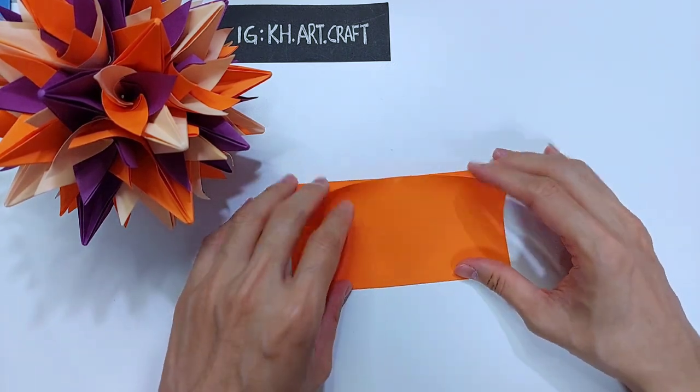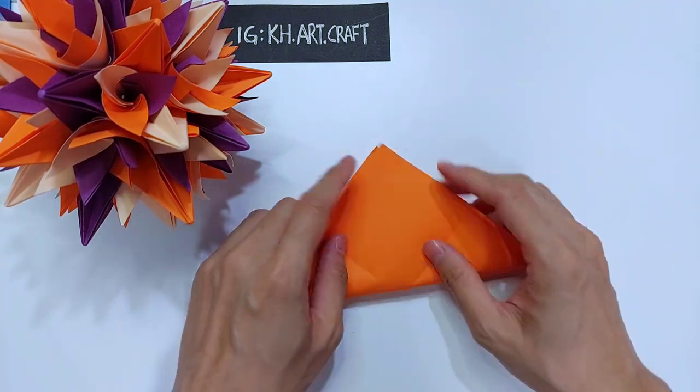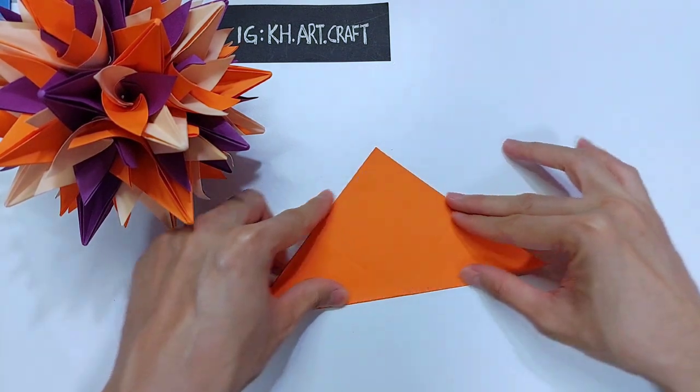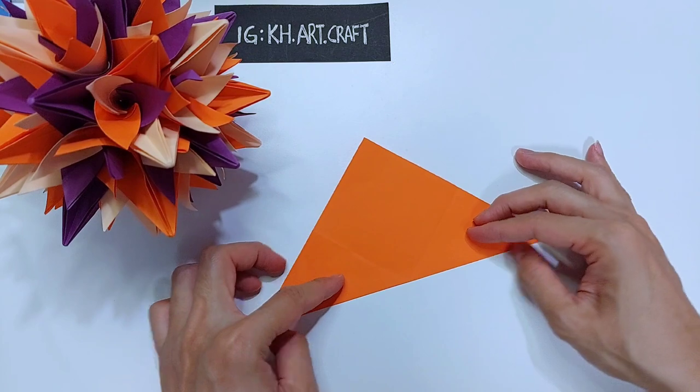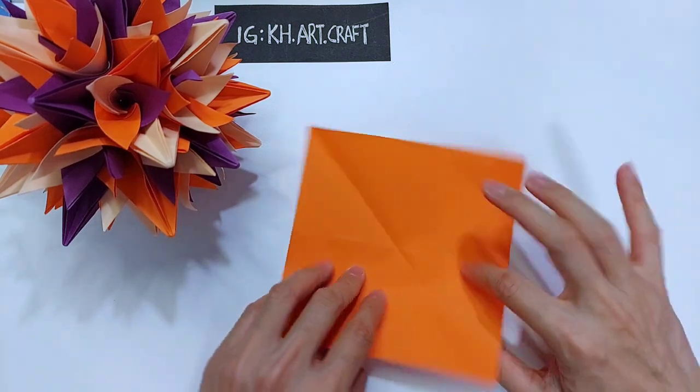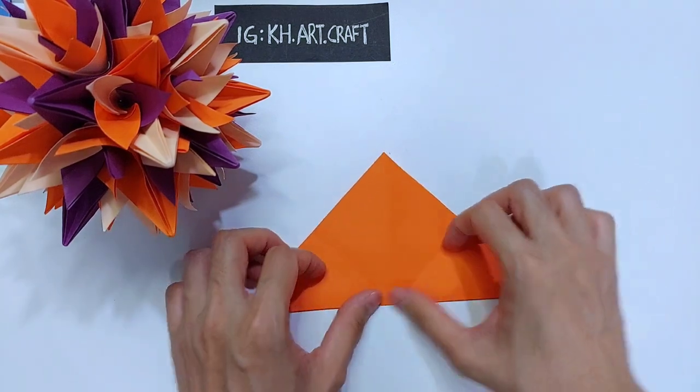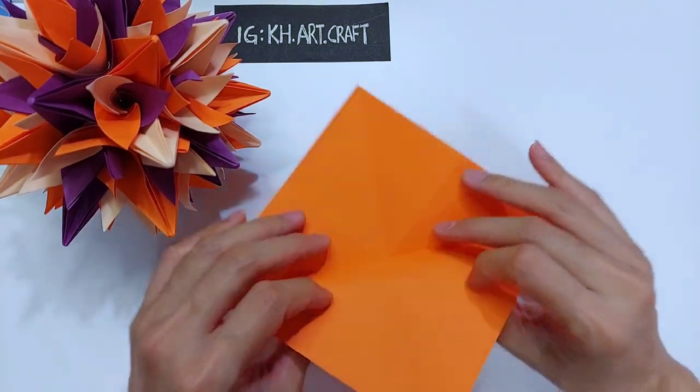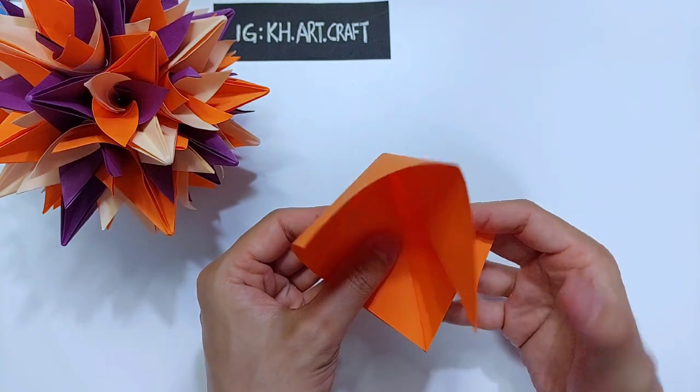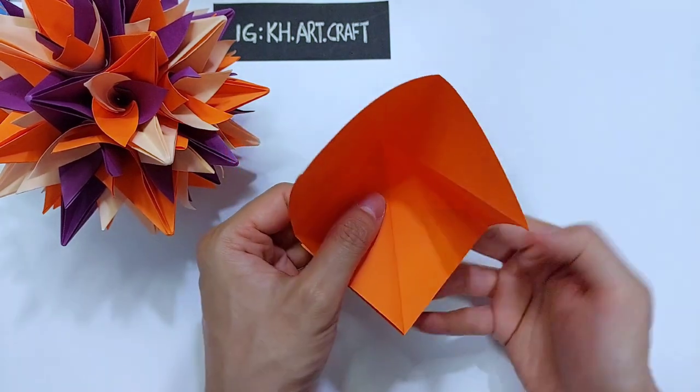Flip over and make diagonal folds. Once we have this pre-creased, we can collapse it into a square base like this.